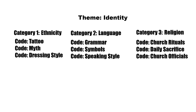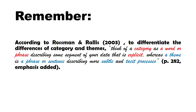This is again Professor Haggard. Let me leave you with another reminder. According to Rusman and Rallis, to differentiate categories and themes: think of a category as a word or phrase describing some segment of your data that is explicit — meaning clear and a portion of the data. A theme, on the other hand, is a phrase or sentence that describes something more subtle and tacit — meaning it more precisely captures the implied meaning in the statements of the people we interviewed. That is about theme.